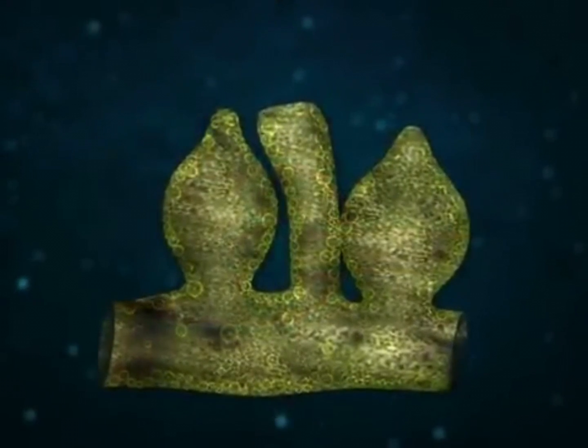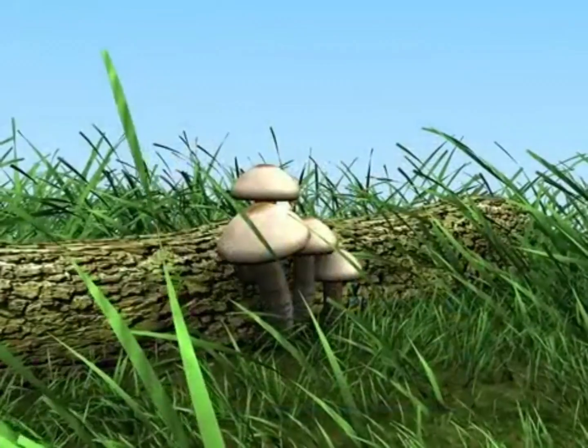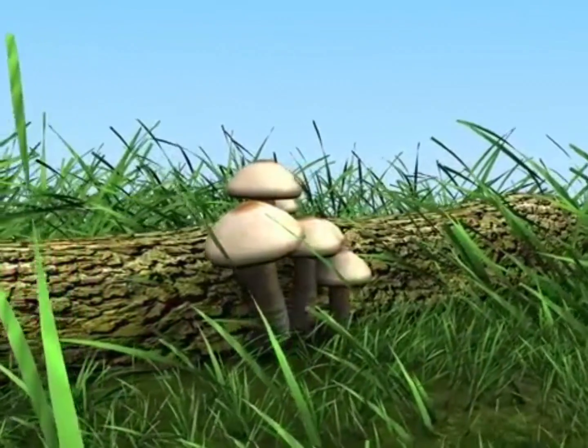The siphonal algae Vaucheria, which contains hundreds of nuclei, and certain fungi are the best examples of cenocyte cells.